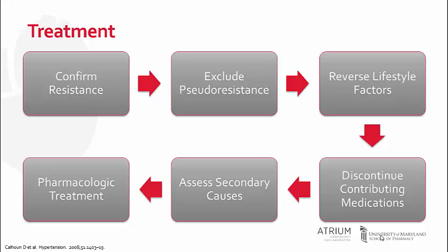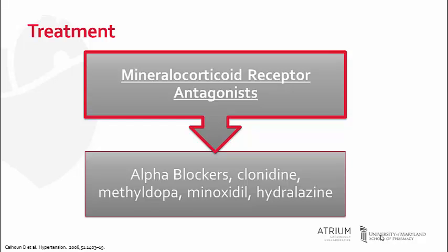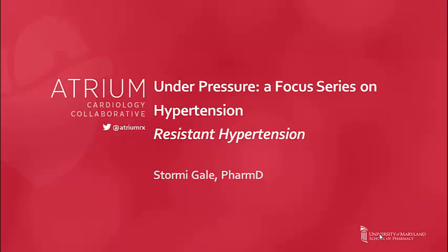Pharmacologic therapy should be the focus of treatment only after all other steps have been addressed. In patients with uncontrolled hypertension on three or more agents including a thiazide diuretic, mineralocorticoid receptor antagonists are the agent of choice. This class inhibits the effect of aldosterone by competing with binding at the renal tubules, and given the high prevalence of primary aldosteronism in the resistant population, this mechanism makes them quite effective. If patients remain persistently uncontrolled, additional options include alpha blockers, centrally acting sympathomimetics such as clonidine and methyldopa, or direct vasodilators such as hydralazine. Agents should be selected based on patient-specific factors such as compliance, cost, and comorbidities. Thank you for joining us.